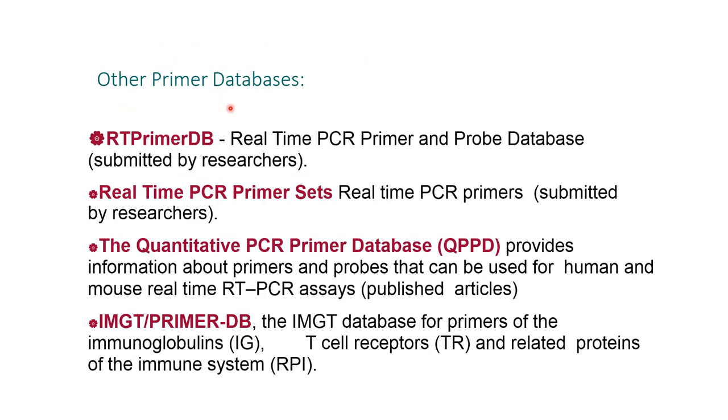Other primer databases such as RTPrimerDB for real-time PCR primer and probe database, Real-Time PCR Primer Sets for real-time PCR primers, The Quantitative PCR Primer Database (QPPD) provides information about primers and probes for human and mouse real-time RT-PCR assays. IMGT/PRIMER-DB, the IMGT database of primers of the immunoglobulins and T cell receptors and related proteins of the immune system.